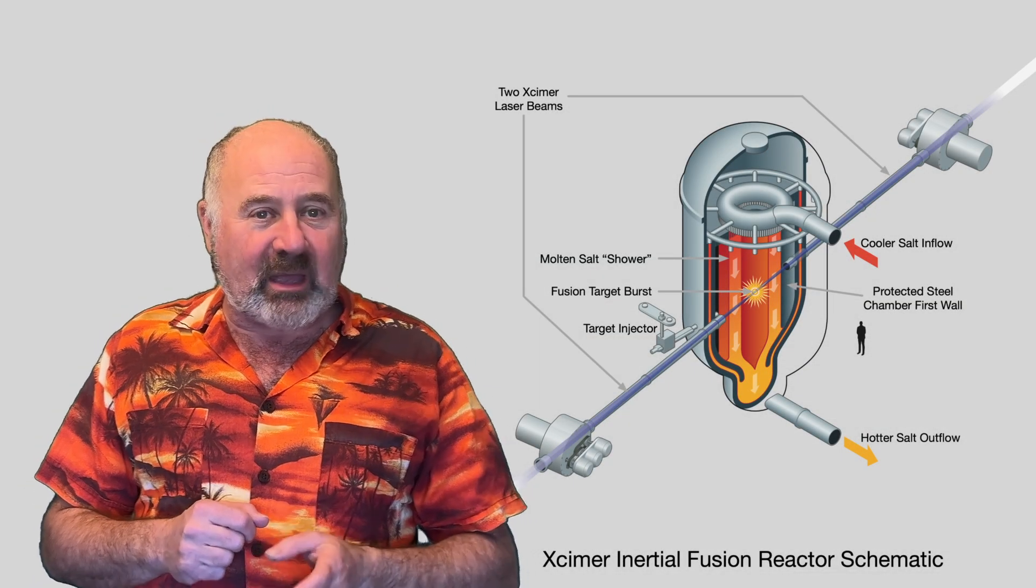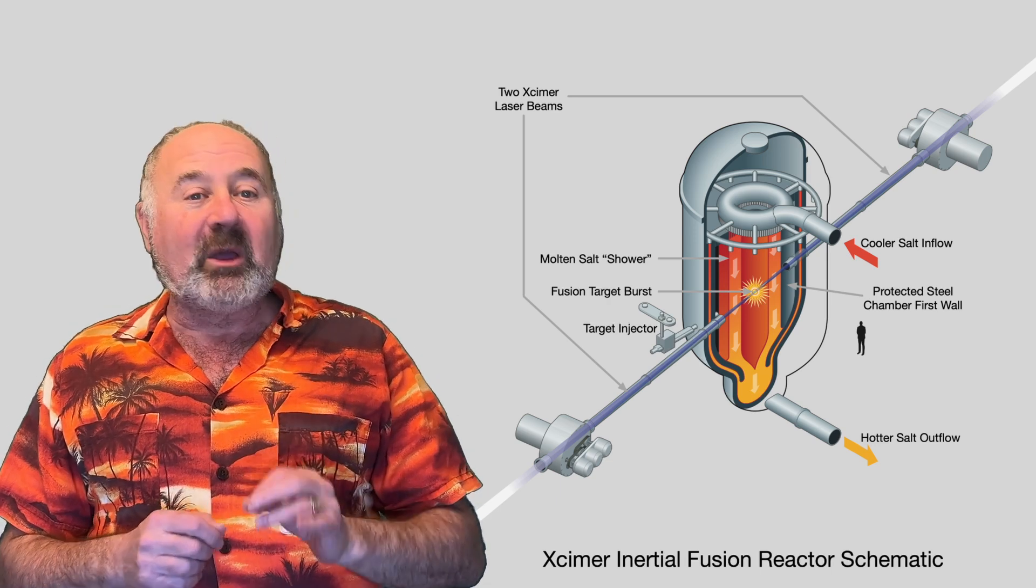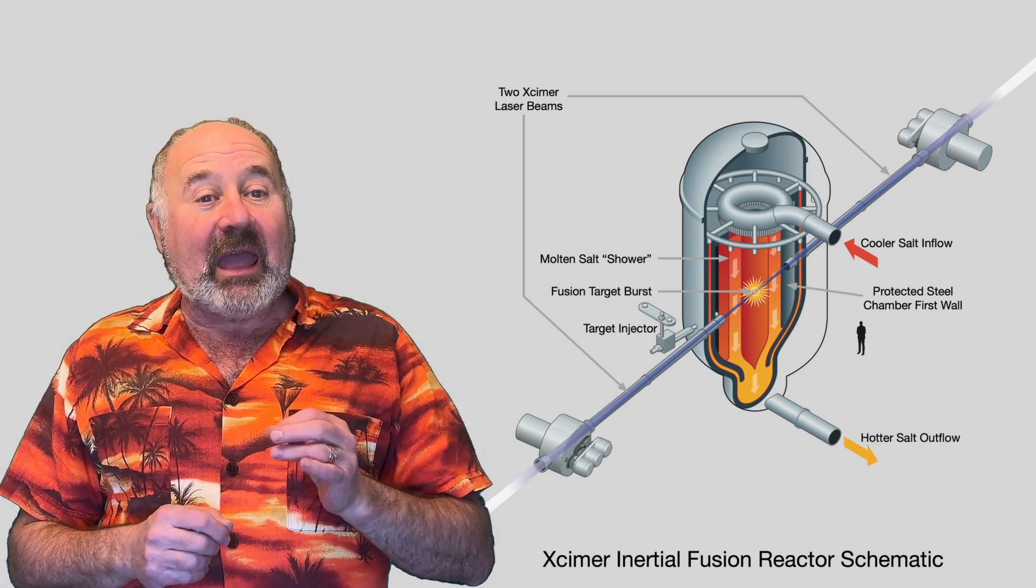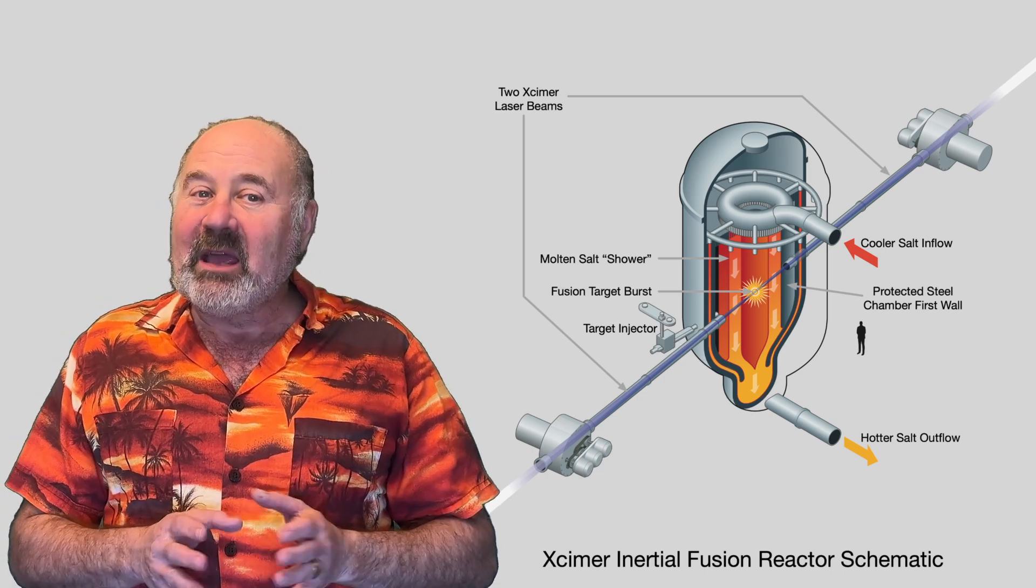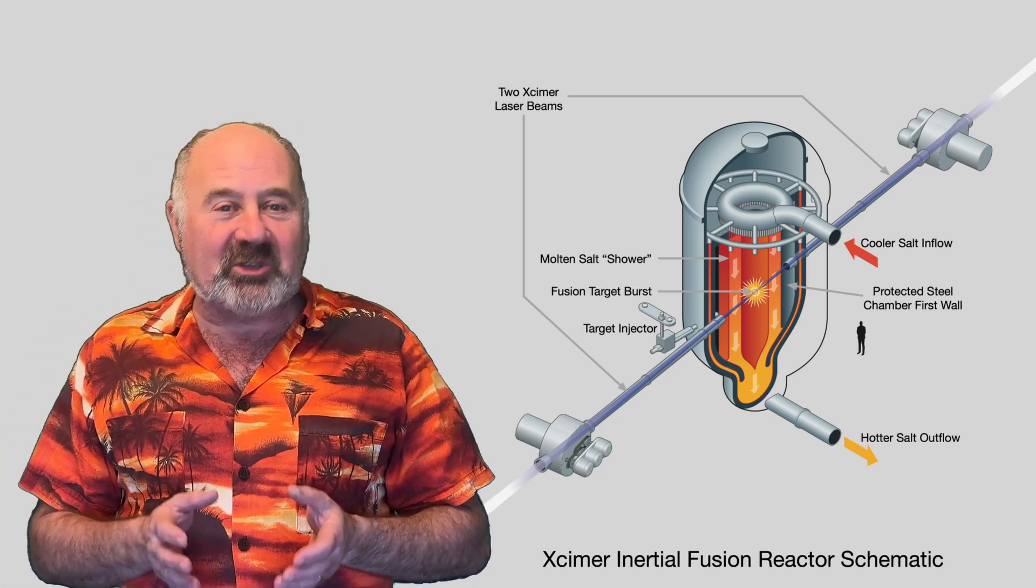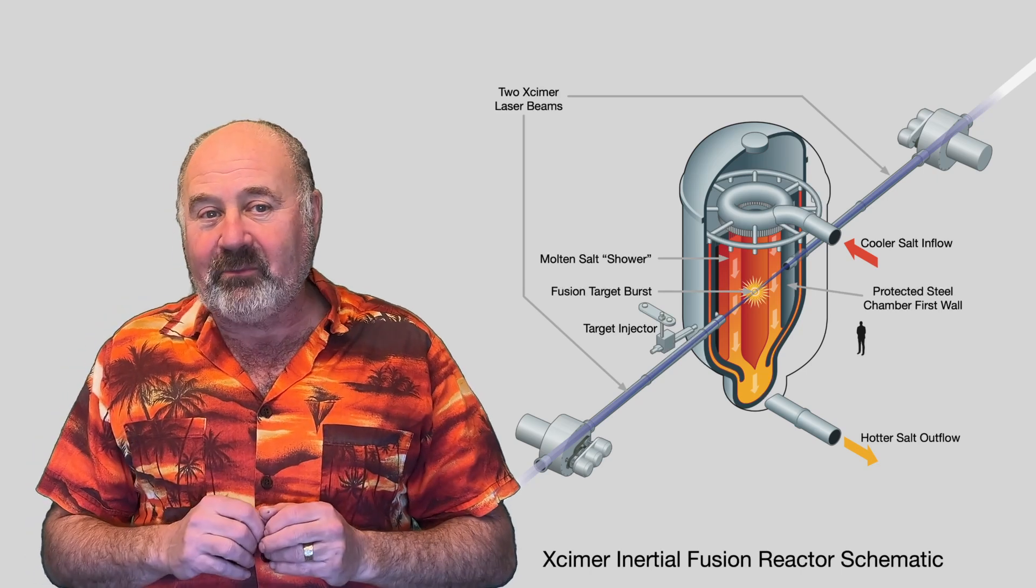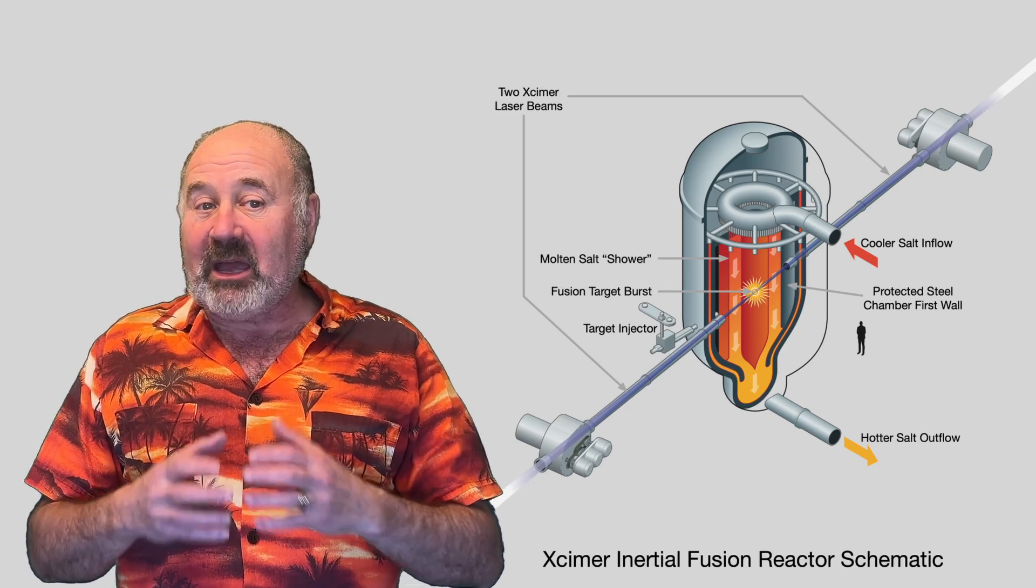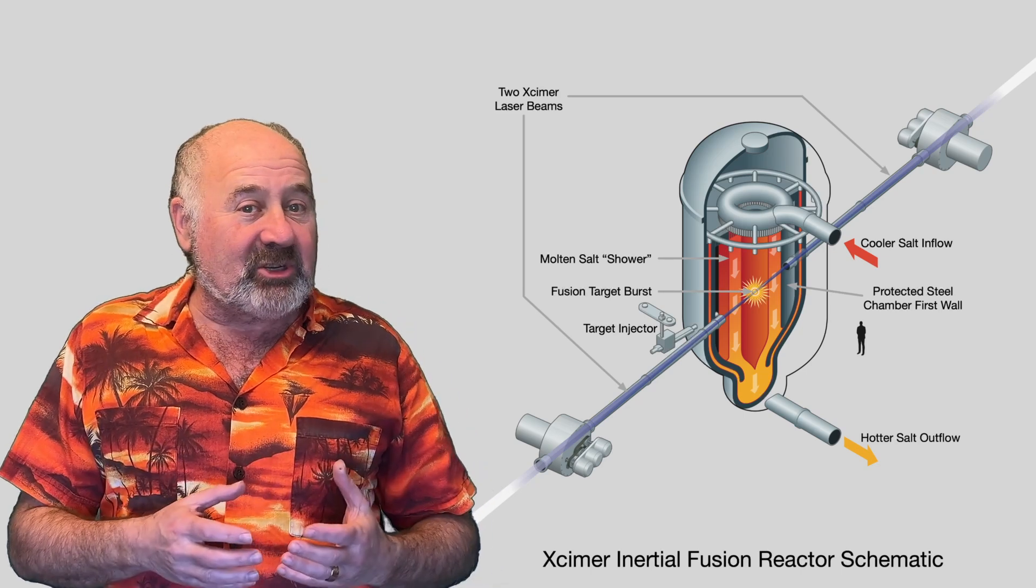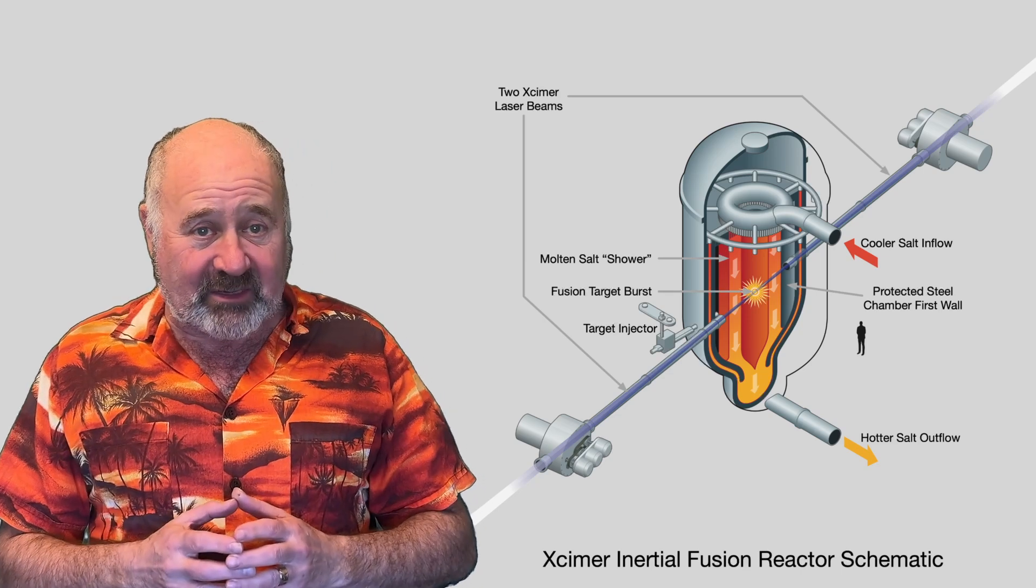Like most fusion companies other than Helion, they're using molten salt with lithium to capture the energy and breed the tritium fuel they need. What they're doing that's less common is having a waterfall of molten salt, so they don't need a wall between the salt and the mini H-bomb. With no solid surface being struck by plasma and neutrons to be damaged, their reactor vessel will last decades and not become radioactive.